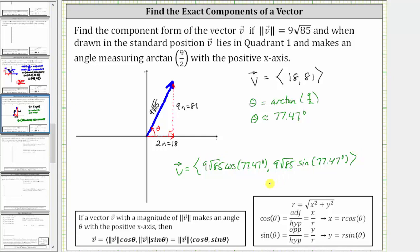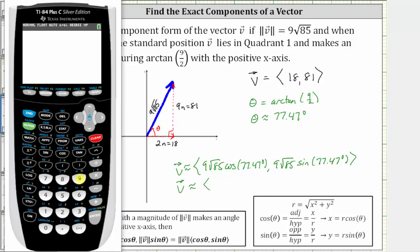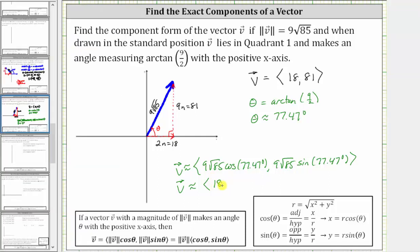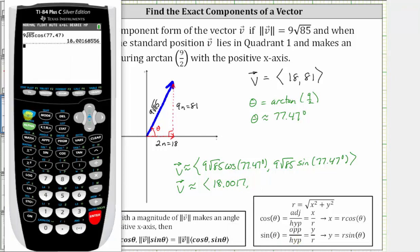Now let's go to the calculator and compare this to the exact values that we already found. 9√85 cos(77.47°) gives us approximately 18.0017, not exactly 18. Let's check the y component by changing cosine to sine. Notice how the y component would be approximately 80.9996 rather than 81.